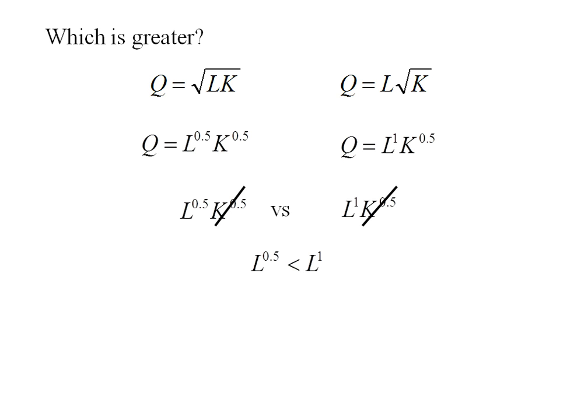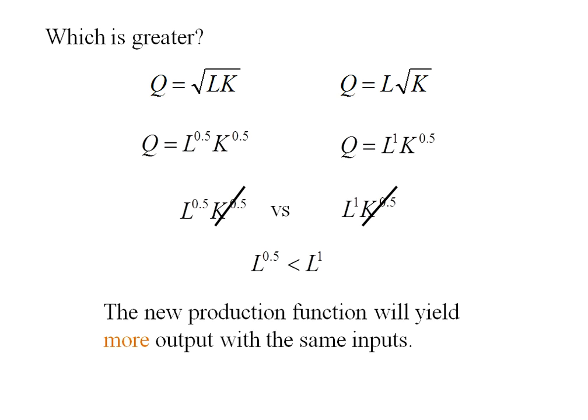What I'm left with is this L to the 0.5, which is less than L to the 1. So the new production function is going to yield more output using the same inputs.